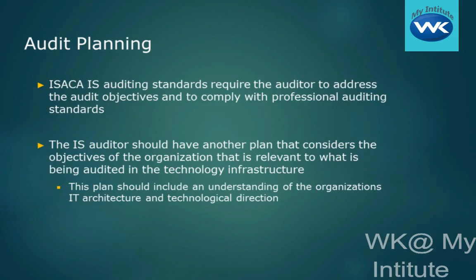When we look at ISACA's IS auditing standards, they require that the auditor address the audit objectives and comply with professional auditing standards. The auditor should have a plan that considers the objectives of the organization and sees how those are relevant to what's being audited in the technology infrastructure. That plan should include an understanding of the organization's IT architecture and their technological direction — where they see their business in a year or a couple of years. We use that information gathering as a foundation for the actual audit planning.